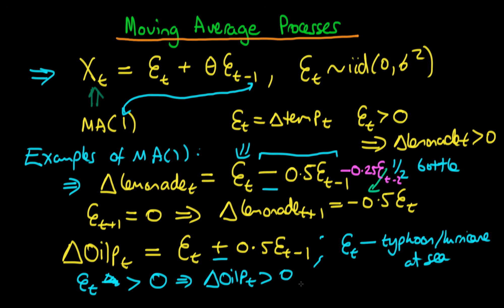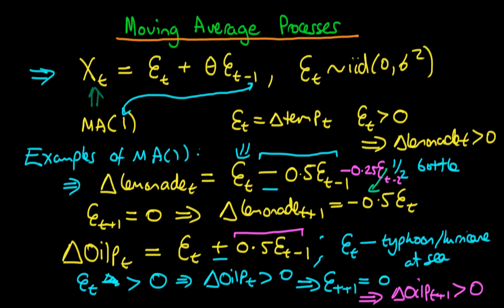In the next period, if there is no hurricane so et plus 1 equals 0, there may still be an increase in oil price because of the plus 0.5 times the previous error — supply is still recovering from the last period. So the change in oil price at t plus 1 is also greater than 0. But in the period after that, with no typhoon in either of the two preceding periods, the change in oil price is just 0 — oil has settled at a higher price level.